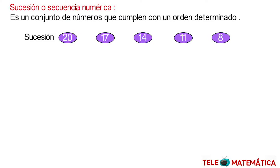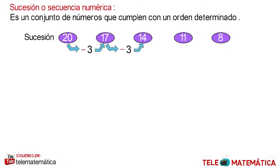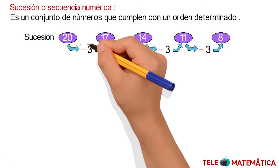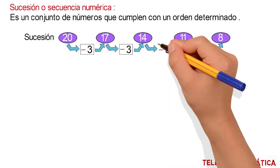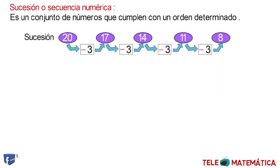We can observe that from the number 20, subtracting 3, we get 17. From 17, subtracting 3, we get 14. From 14, subtracting 3, we get 11. And from 11, subtracting 3, we get 8. This value, "-3", is called the pattern, and in this case the operation used was subtraction.